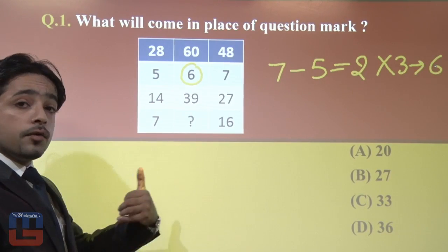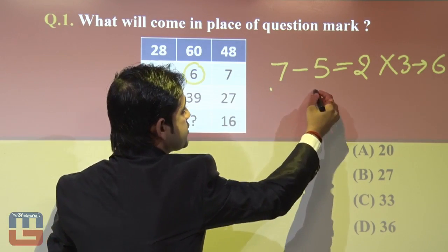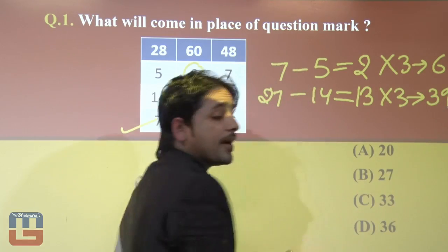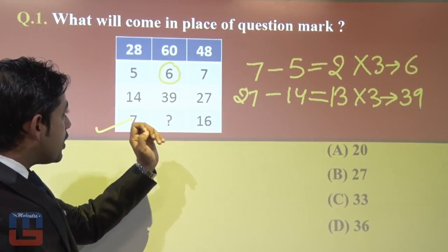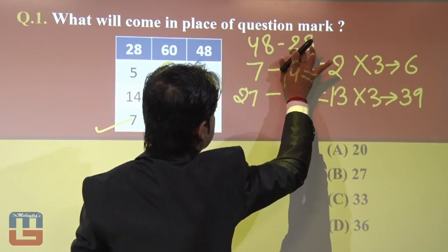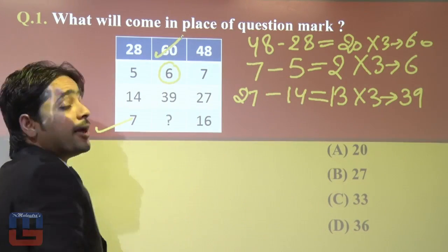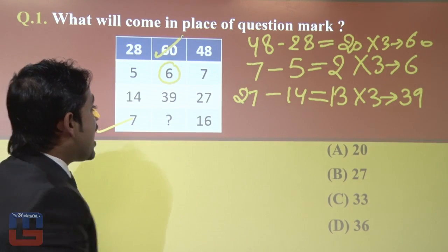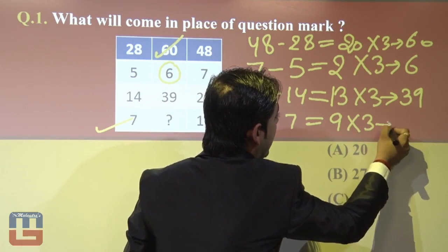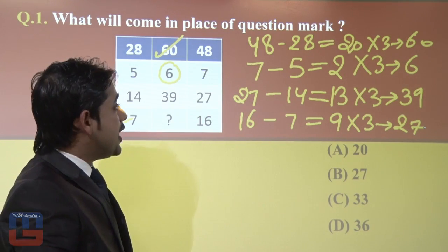The new approach: subtract the first number from the last number. For example, 7 minus 5 = 2, and 2 multiplied by 3 gives 6. Let's verify on row 3: 27 minus 14 = 13, and 13 × 3 = 39 — correct. For row 1: 48 minus 28 = 20, and 20 × 3 = 60 — confirmed. So for the missing number: 16 minus 7 = 9, and 9 × 3 = 27. The answer is 27.